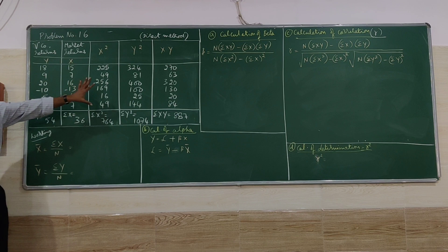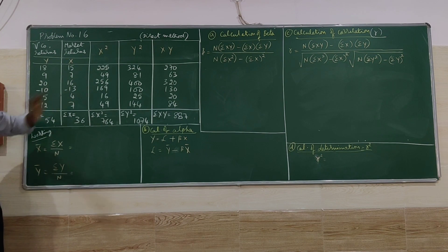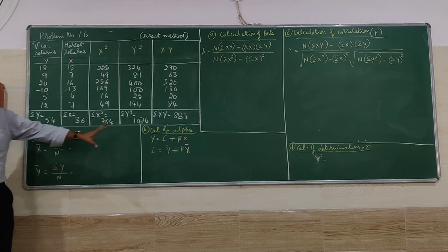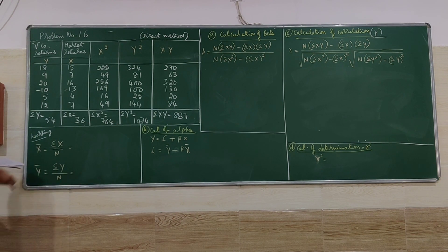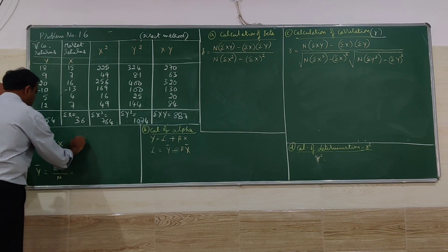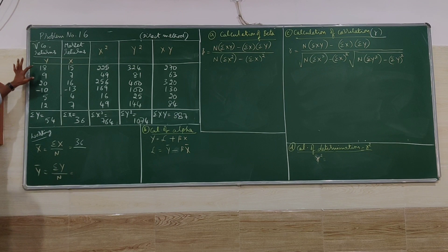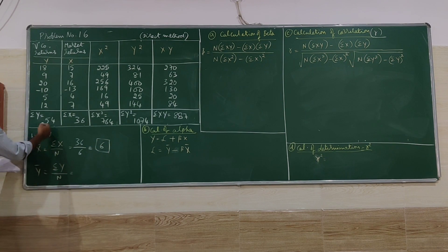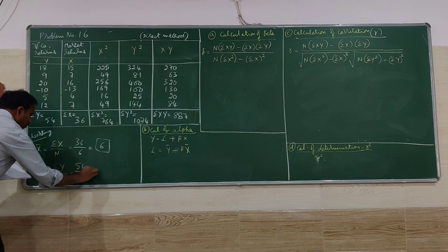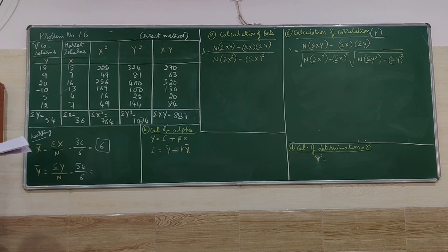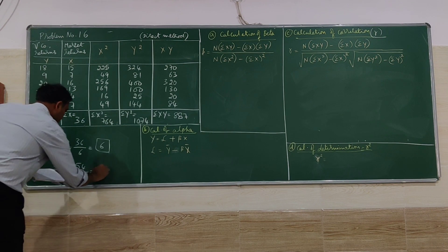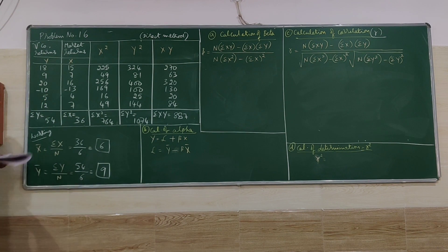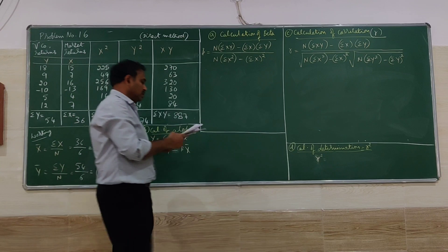After calculating all the column values, we first find the working values helpful for alpha calculation. Summation x divided by n: 36 divided by 6 = 6, so x̄ = 6. Then Σy divided by n: 54 divided by 6 = 9, so ȳ = 9.